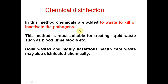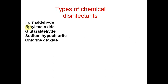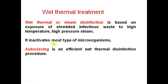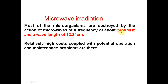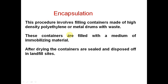Chemical disinfection involves adding chemical products to waste before it goes to scavengers or disposal. Chemicals used include formaldehyde, ethylene oxide, glutaraldehyde, sodium hypochlorite, and chlorine dioxide. Wet thermal treatment is autoclaving at 120 degrees Celsius, 15 lbs pressure, for 15 minutes. Microwave irradiation operates at 2450 megahertz frequency and 12.24 cm wavelength to destroy microorganisms.